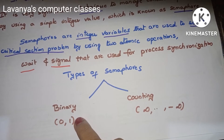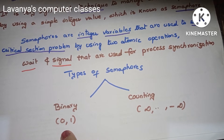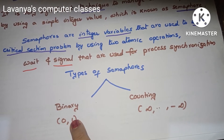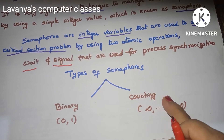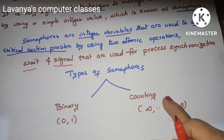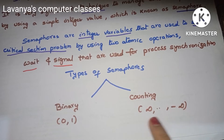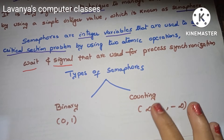Binary means two, so in a binary semaphore the values are only zero and one. In a counting semaphore, the semaphore values range from minus infinity to infinity — any number of processes can execute.